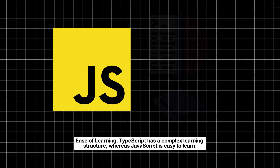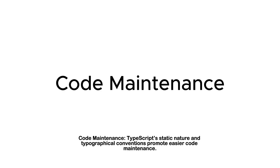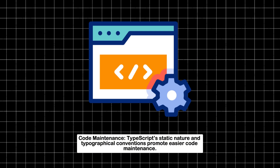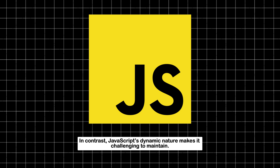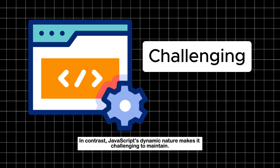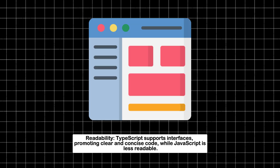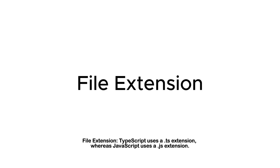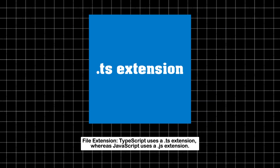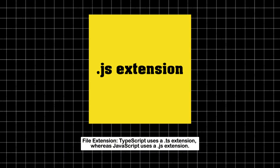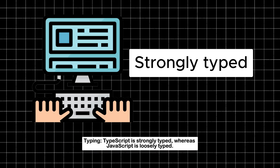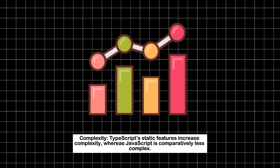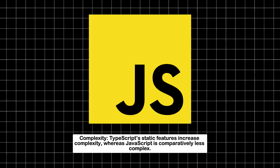TypeScript versus JavaScript — key differences: Ease of learning: TypeScript has a complex learning structure, whereas JavaScript is easy to learn. Code maintenance: TypeScript's static nature and typographical conventions promote easier code maintenance; in contrast, JavaScript's dynamic nature makes it challenging to maintain. Readability: TypeScript supports interfaces, promoting clear and concise code, while JavaScript is less readable. File extension: TypeScript uses a .ts extension, whereas JavaScript uses a .js extension.